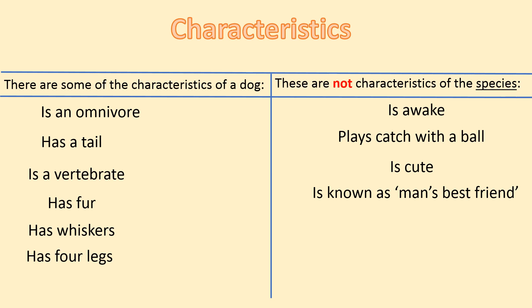And in this column, these are not characteristics of the species: Is awake. Plays catch with a ball. Is cute. Is known as man's best friend. Now why do you think these statements are not characteristics of the dog? Have a think, and you can discuss this with your adult.